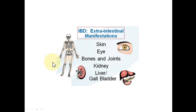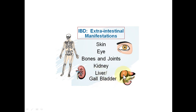The extra-intestinal manifestations of IBD are more prominent in Crohn's disease compared to ulcerative colitis. In ulcerative colitis, extra-intestinal manifestations mainly involve the liver, resulting in cholangitis. In Crohn's disease, antibodies produced by plasma cells may attack sites outside the intestine due to molecular mimicry, affecting the skin, eye, bones and joints, kidneys, liver, and gallbladder, though liver and gallbladder manifestations are more prominent in ulcerative colitis.